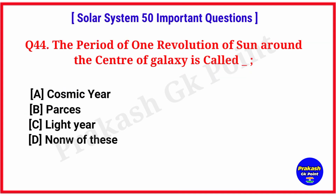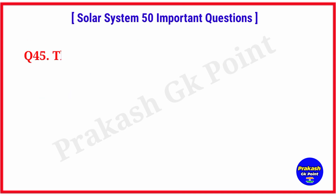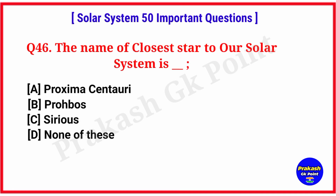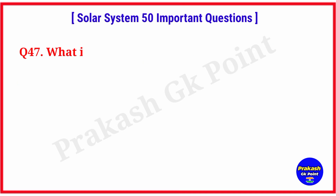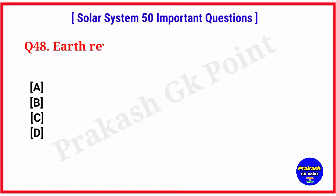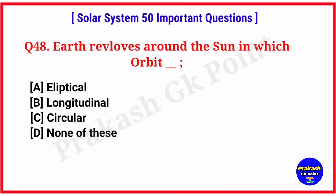The period of one revolution of the sun around the center of the galaxy is called? Answer: option A, Cosmic Year. The study of the universe is called? Answer: option B, Cosmology. The name of the closest star to our solar system is? Answer: option A, Proxima Centauri. What is the distance between the sun and Earth? Answer: option C, 150 million km. Earth revolves around the sun in which orbit? Answer: option A, elliptical orbit.